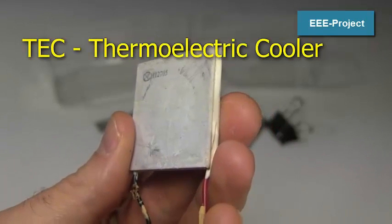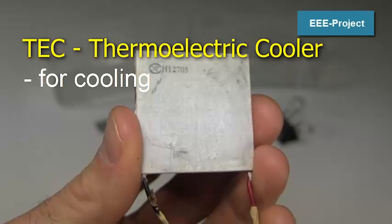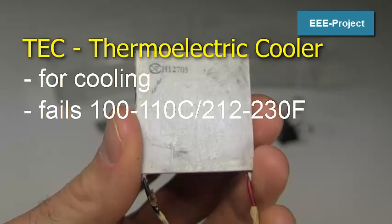One last thing. The Peltier module I found in the water dispenser is a TEC type, a thermoelectric cooler, designed for cooling, not generating electricity. It can handle only up to around 100 to 110 Celsius, or 212 to 230 Fahrenheit, before being damaged.